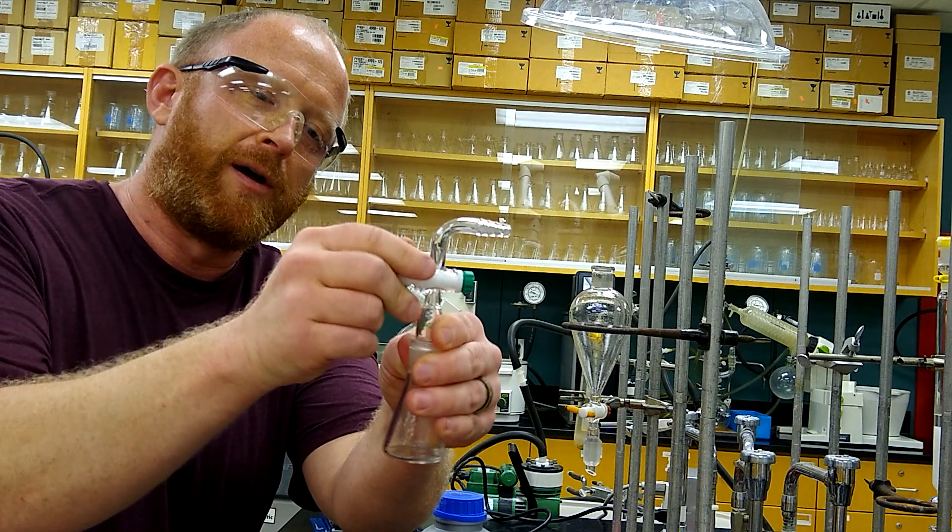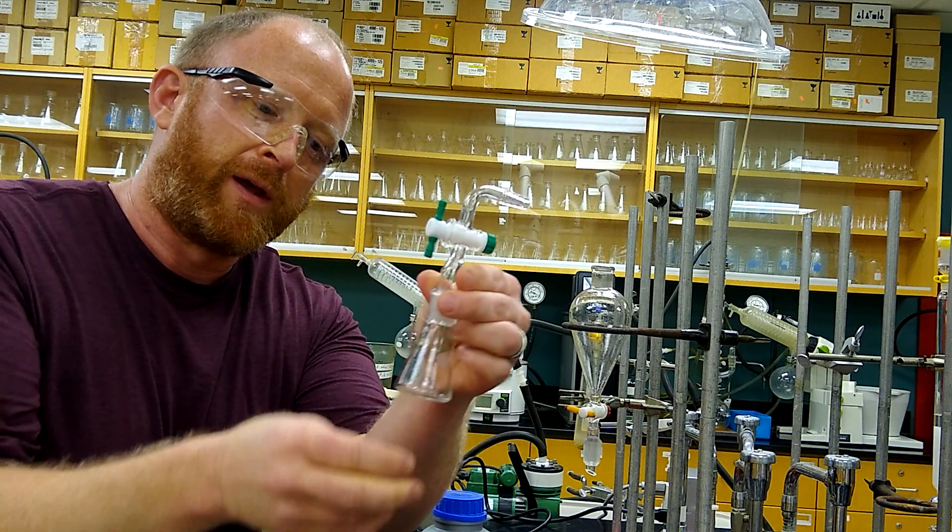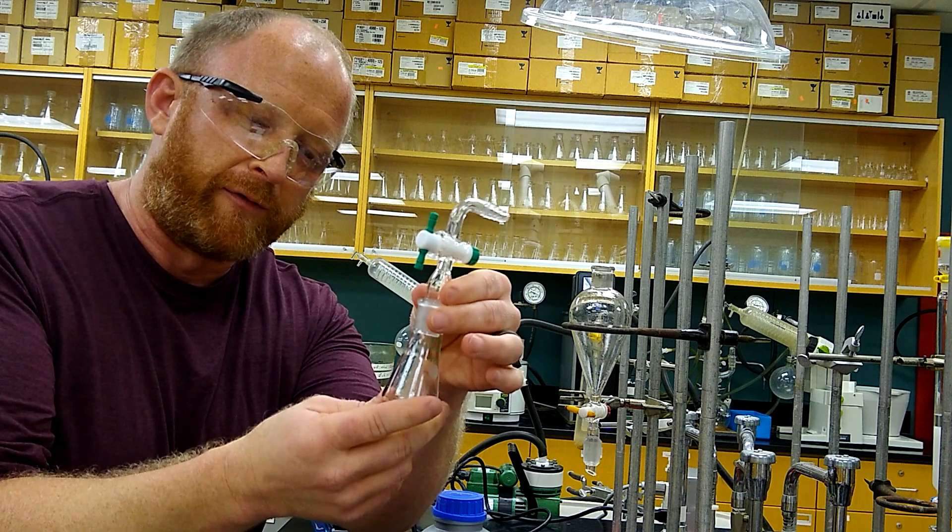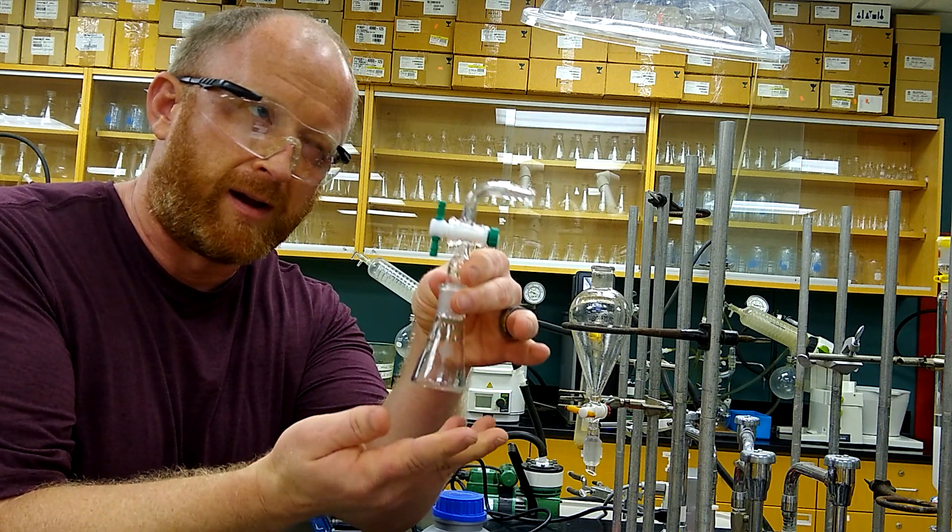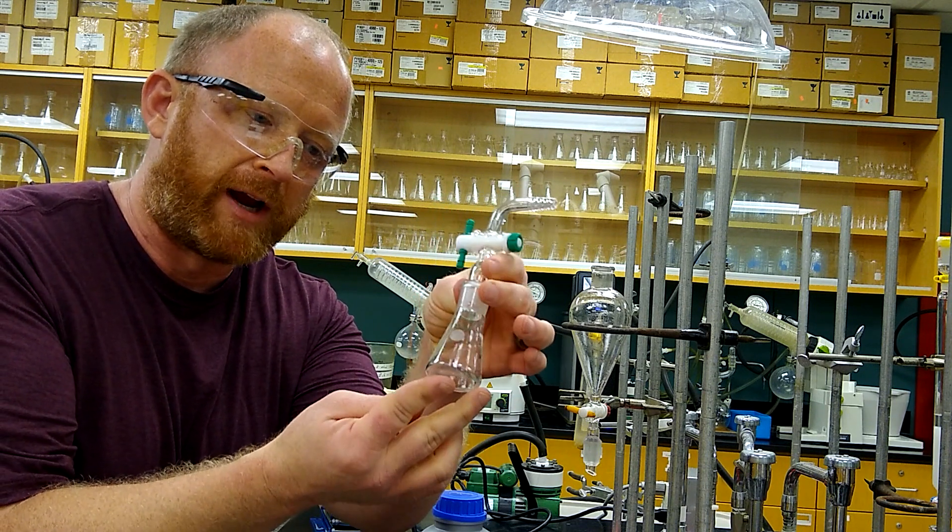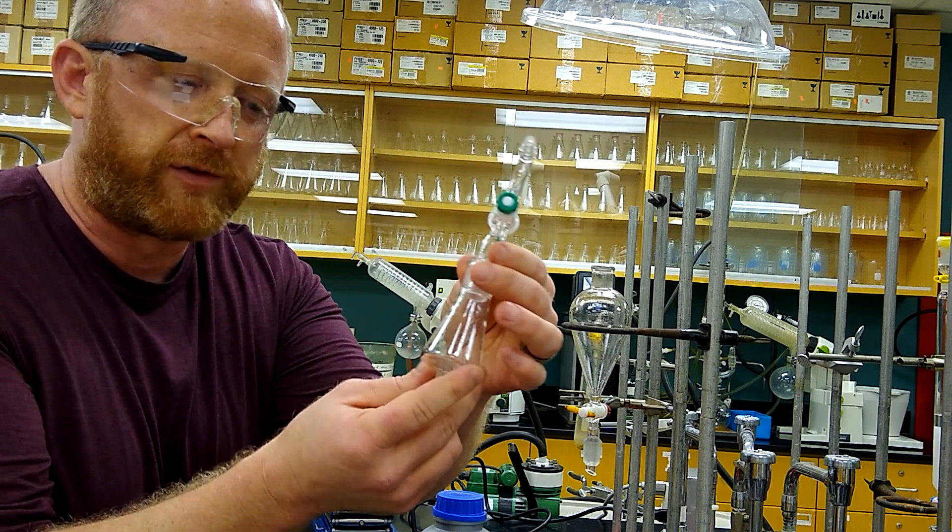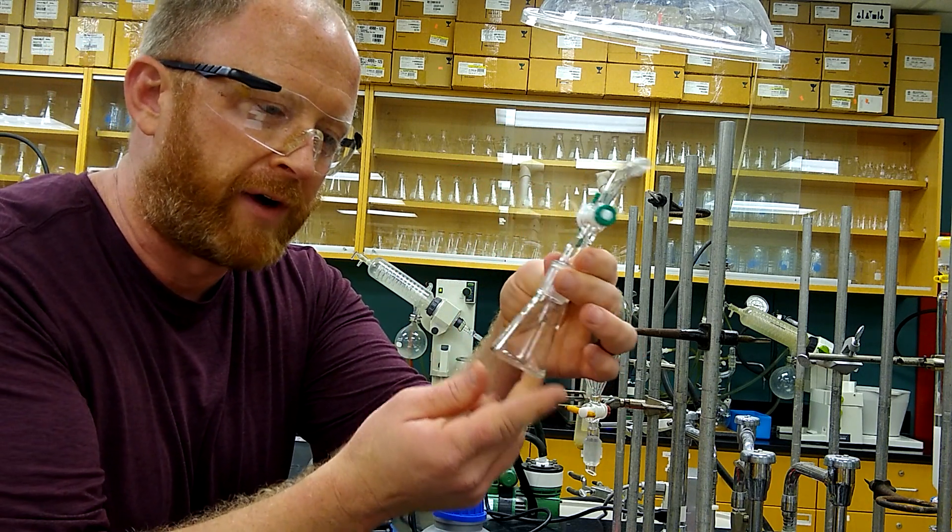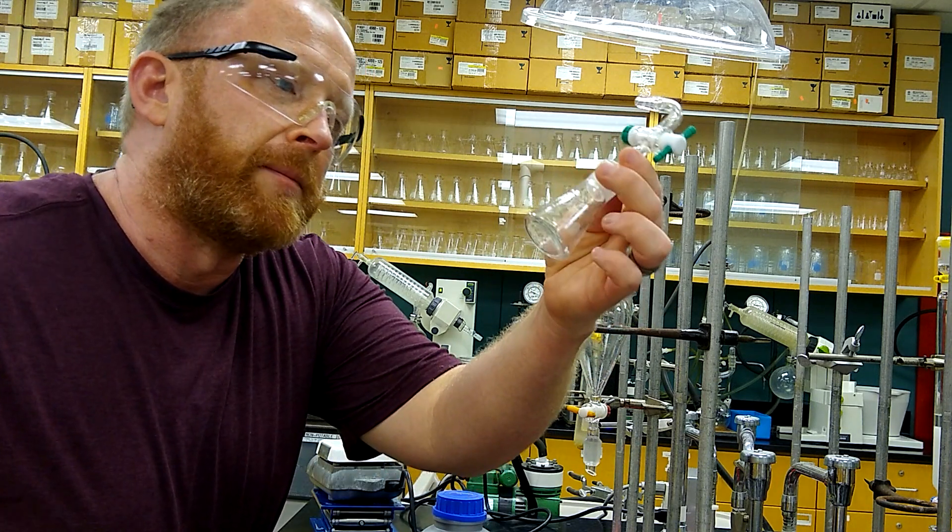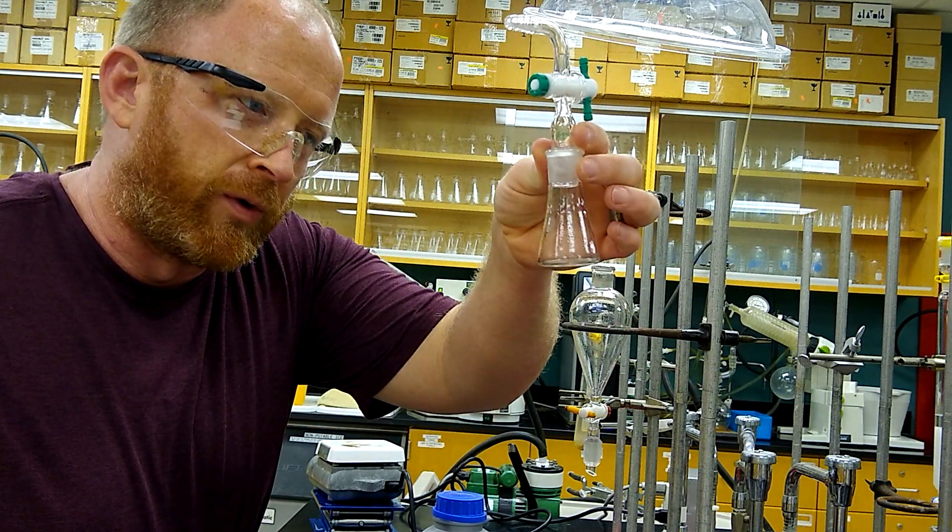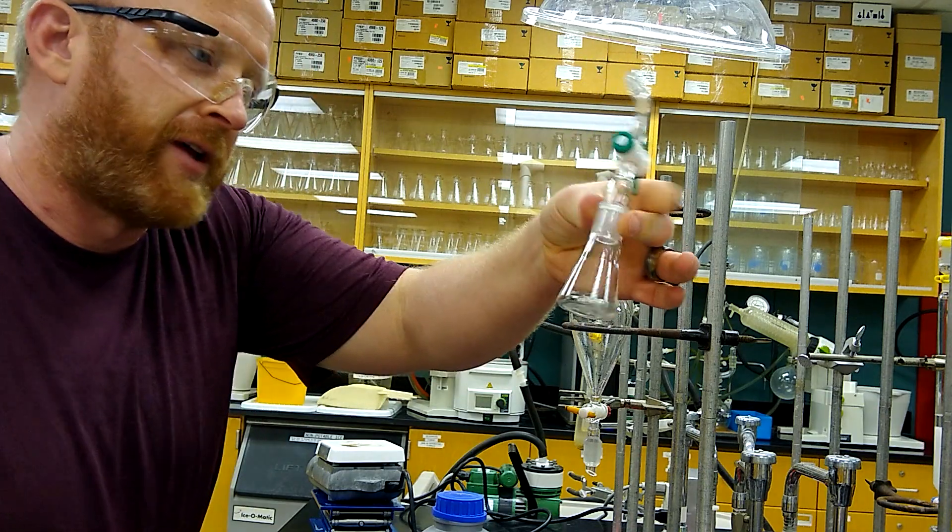That'll help us get rid of any trace bromopropane we might have, because our product should be a solid melting at about 45 or so. Since we still have some liquid remaining, the vacuum pump should take care of that.